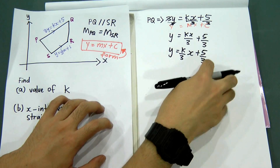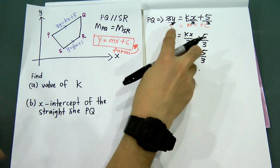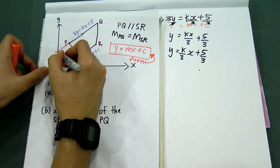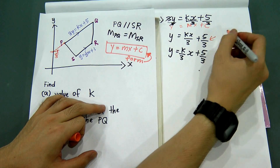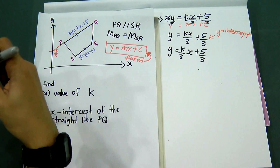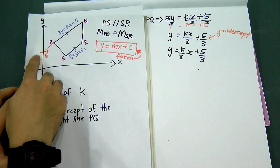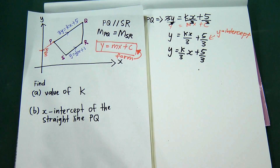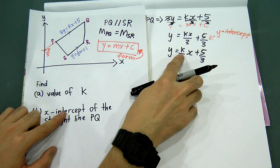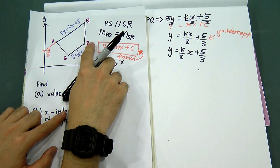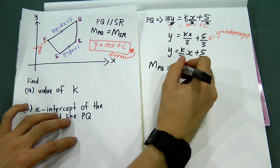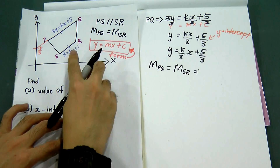The 5/3 means that if you extend the straight line PQ, it will cut the y-axis at 5/3. C always represents the y-intercept, meaning the straight line cuts the y-axis at that value. But this is not important for part (a), which asks us to find the value of k. Since PQ is parallel with SR, the gradient for PQ equals the gradient for SR, which is 1/2.